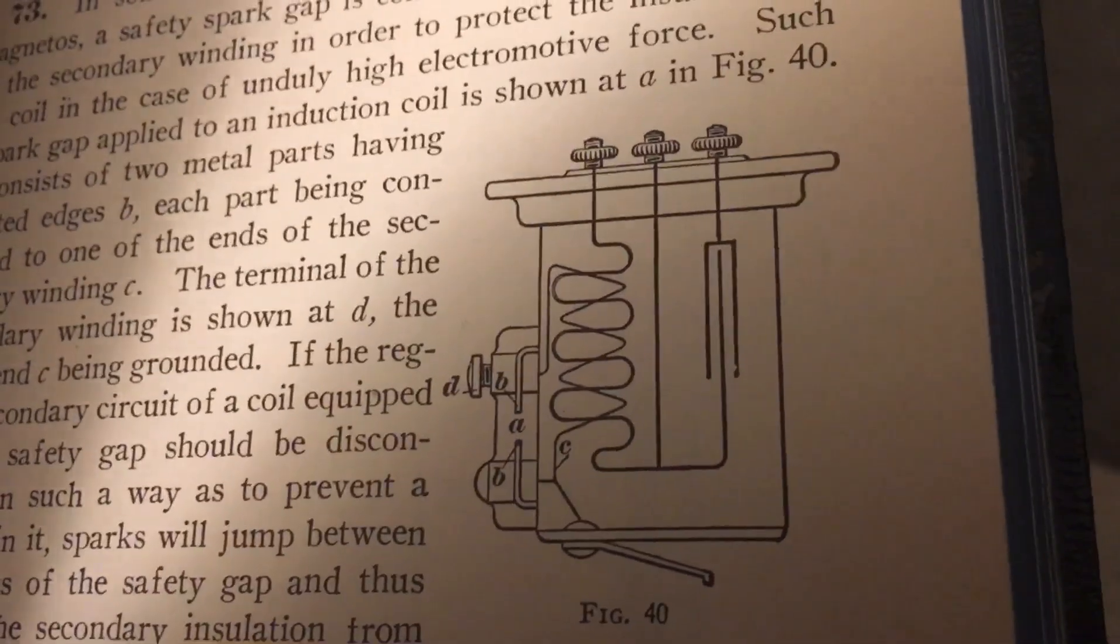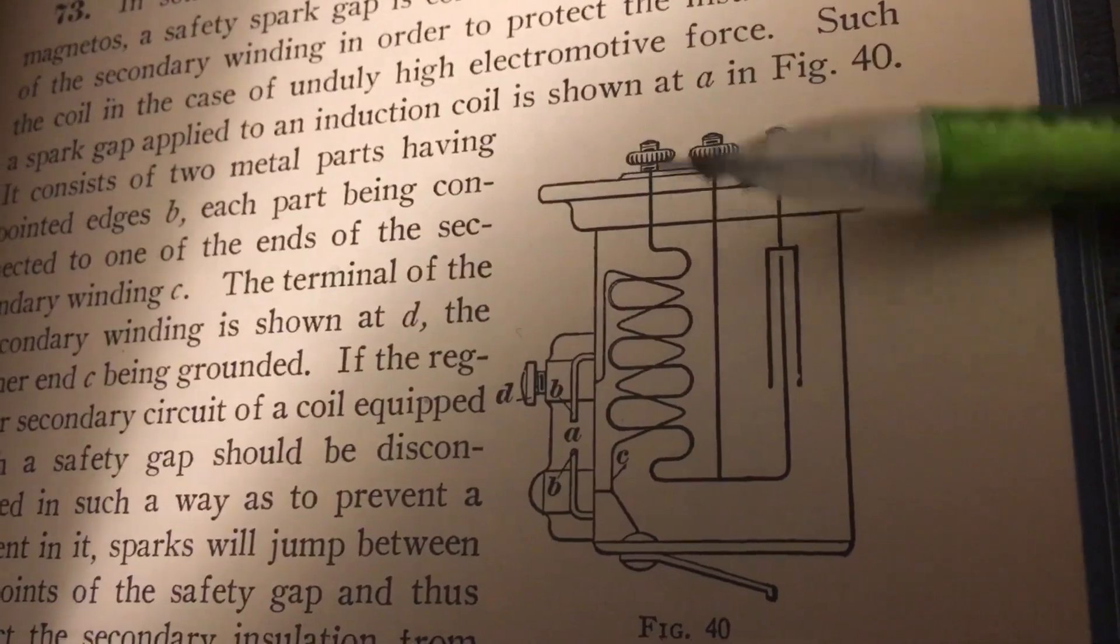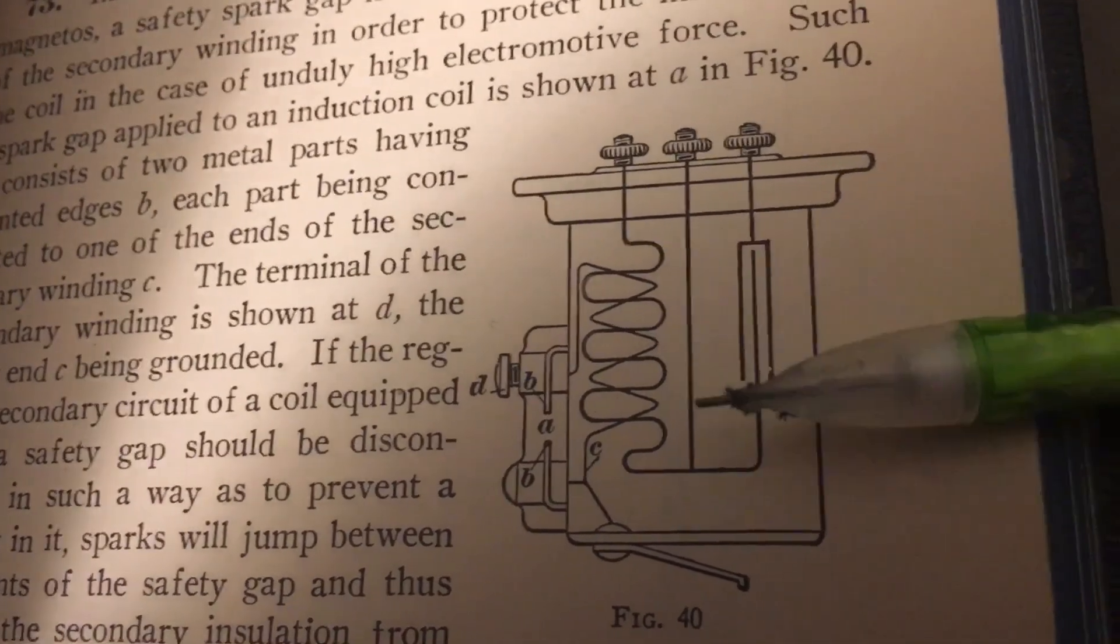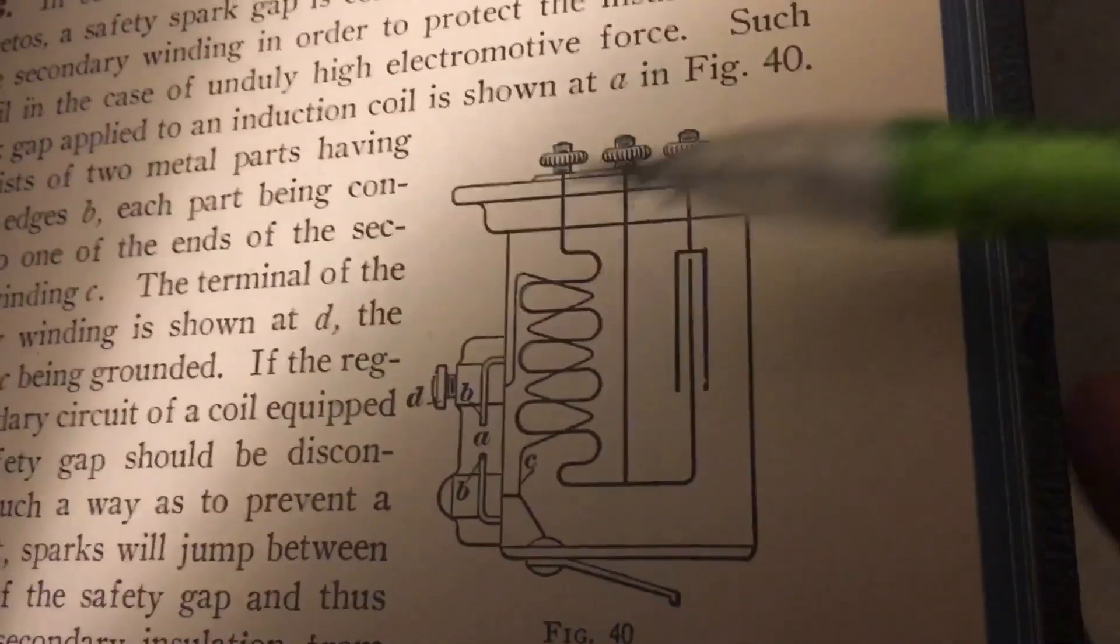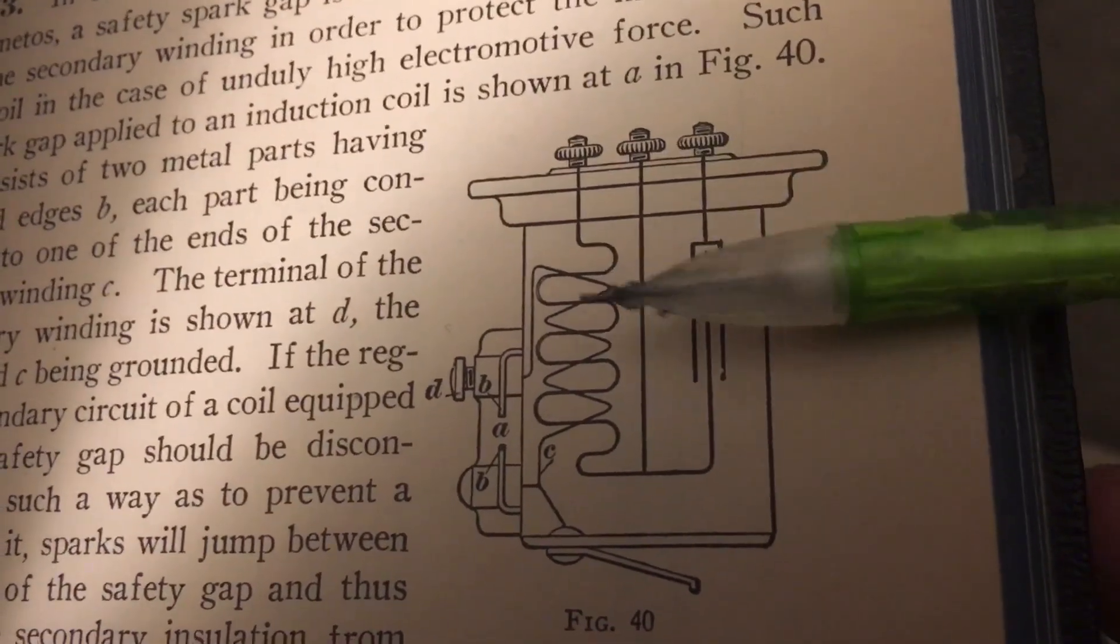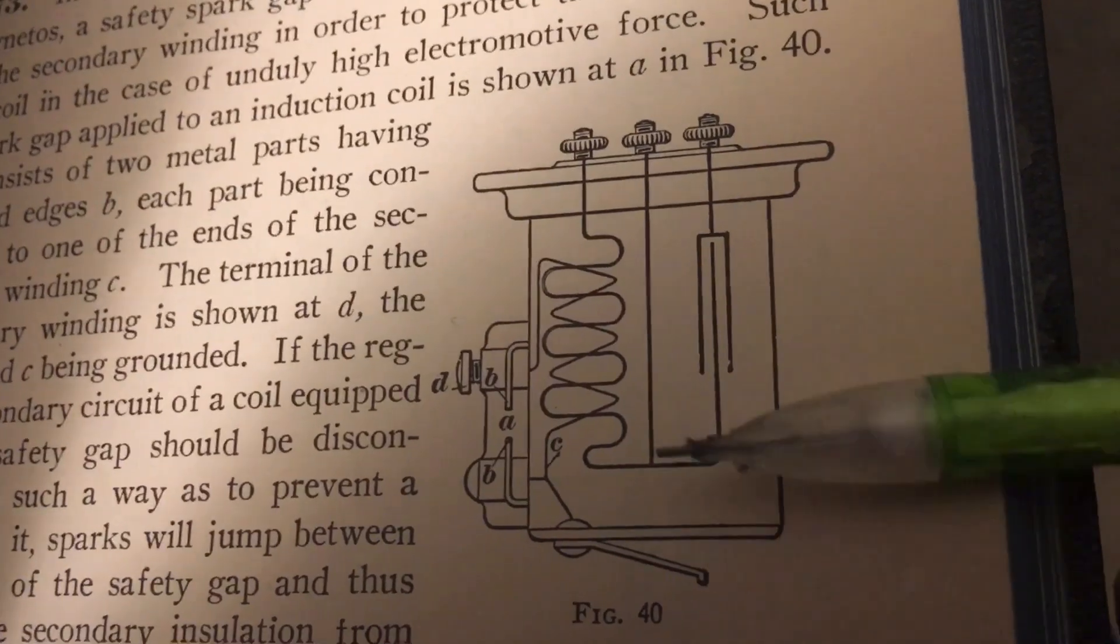This is an ignition coil. The primary and secondary coils are drawn in a bit of an unconventional manner here, but that's what we're looking at. This is the battery feed and the primary coil is going off to the switching contacts here.